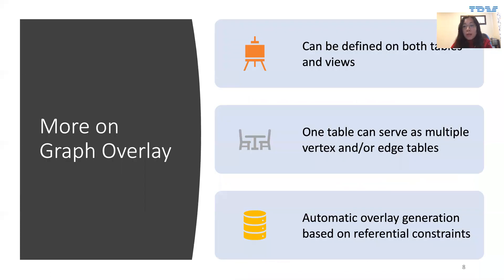The graph overlay can be defined on both base tables and views. One relational table can be used as multiple vertex tables, multiple edge tables, or both. Users can handcraft the overlay configuration file, but we also provide an automatic overlay generator which utilizes primary and foreign key constraints to infer relationships among data.